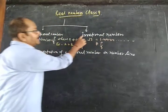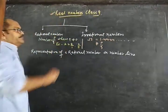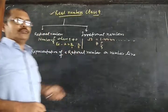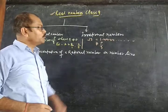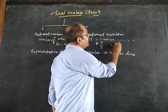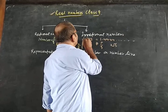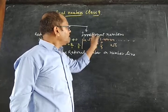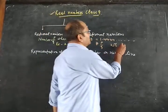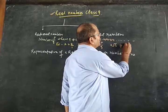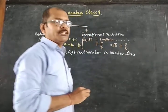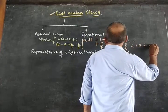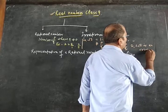Both rational numbers and irrational numbers are called real numbers. Either this one is a real number, or this one is a real number. For example, 2√5 — a number which cannot be written in the form of p/q. So √2 is an irrational number, and 2√5 is also an irrational number because 2√5 cannot be represented as p/q.